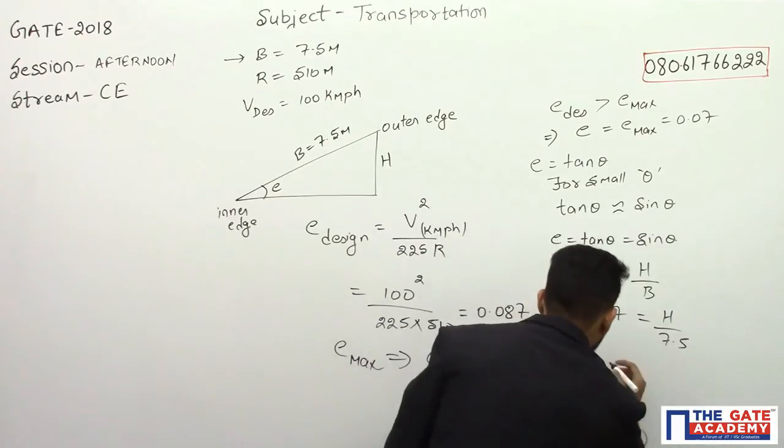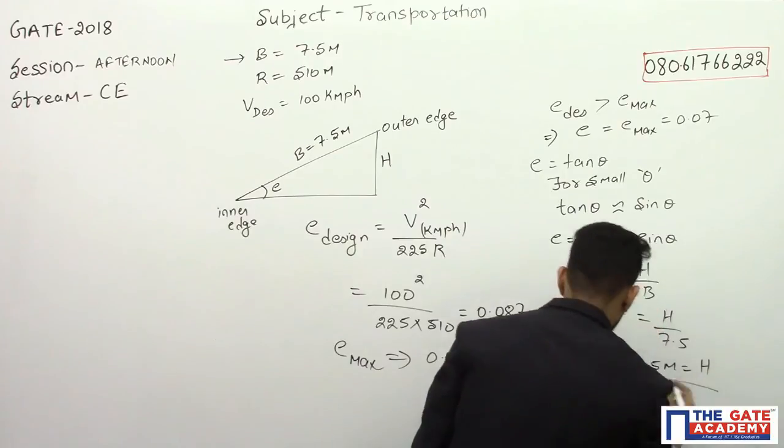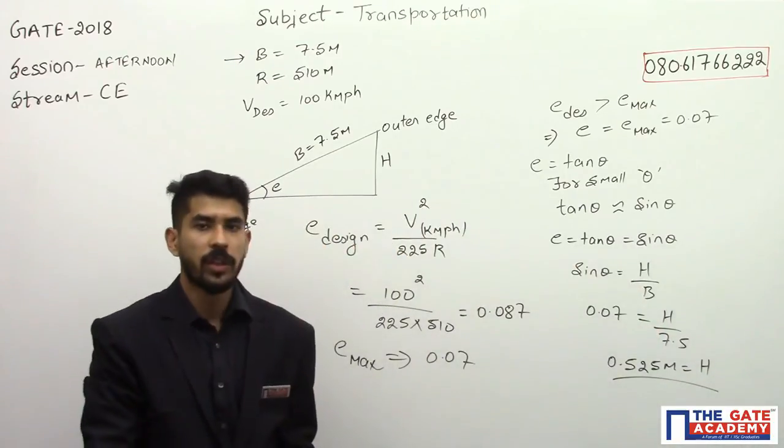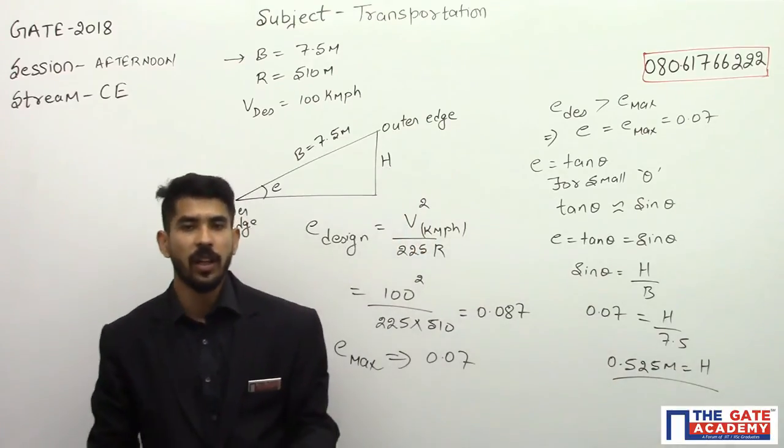So the difference between the inner edge and the outer edge is 0.525 meters.